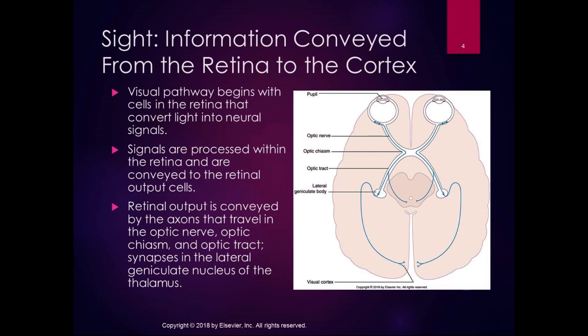Sight information is conveyed from the retina to the cortex. The retina is formed by photosensitive cells; light strikes the retina and is encoded into neural signals by those retinal output cells. The axons from the retina travel in the optic nerve through the optic chiasm, where some axons cross the midline and some don't, then through the optic tract to the lateral geniculate nucleus of the thalamus, and then to the primary visual cortex in the occipital lobe.